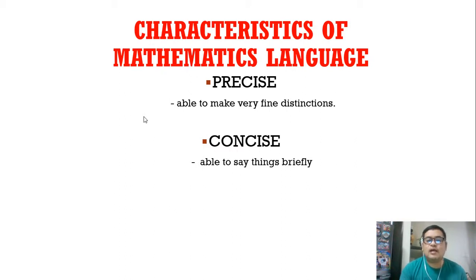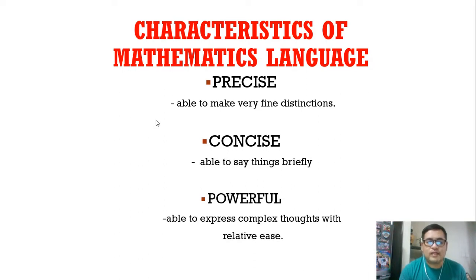In English, when you paraphrase a certain sentence, you compress it, but the thought is still there. The same is true with mathematics—it's concise. We have powerful, which means you're able to express complex thoughts with relative ease. Sometimes many are afraid of mathematics because they find it difficult to understand, but the particular symbols or group of symbols are actually expressing simple thoughts.